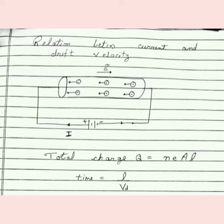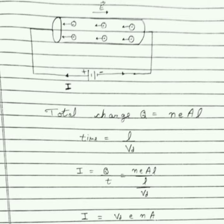Charge is equal to nAl, where A times l is the total volume, so total charge is equal to nAl. Time can be found using the formula: length upon drift velocity, T = l / vd. So current I equals Q upon T, which is nAl divided by l upon vd.